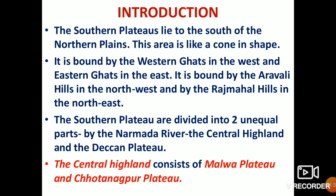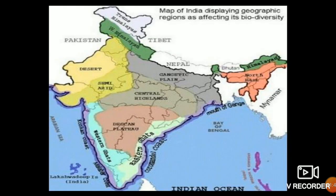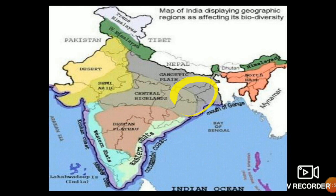The Central Highland consists of the Malwa Plateau and the Chhota Nagpur Plateau. On the map, you can see the Deccan Plateau, Central Highland, Aravli Range, Thar Desert, Rajmahal Hills, Eastern Ghats, and Western Ghats — this is your Southern Plateau basically.